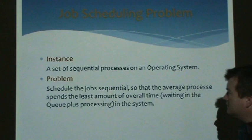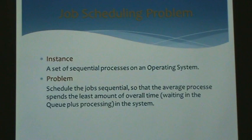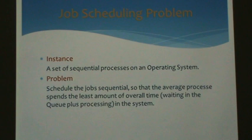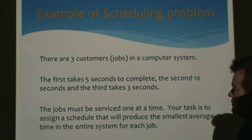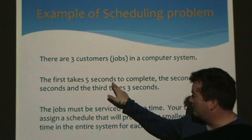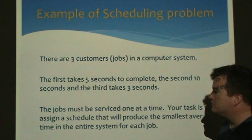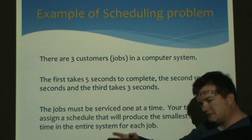The first problem we'll look at: suppose we have an operating system with three jobs that have to run sequentially. It's kind of like going to a supermarket with your shopping cart and everyone lines up at the cashier. You finish your job when the cashier is done with you, and then the next person goes. The first job takes five seconds, the second takes ten seconds, and the third takes three seconds. They all arrived at the same time, so we need to figure out which one should go first, second, and third — the best batting order.